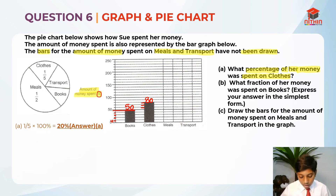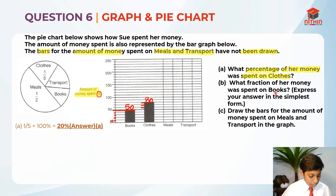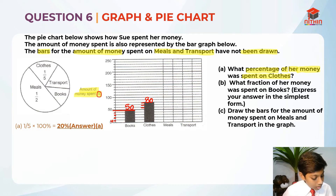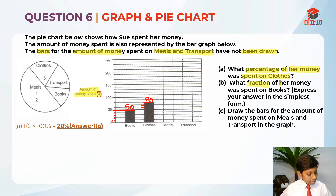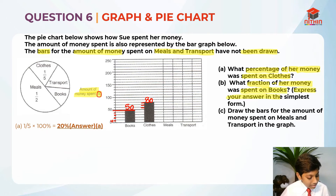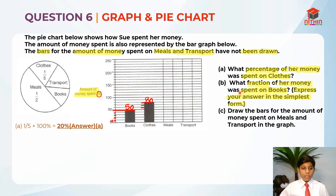Now let's read Part B. Part B asks: what fraction of her money was spent on books? We must express our answer in the simplest form. Remember: if you do not express your answer in simplest form, you will not get full marks — only the method mark. So we need to find the fraction of her total money that was spent on books and simplify it.